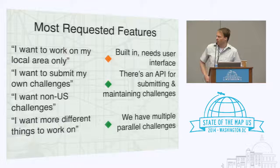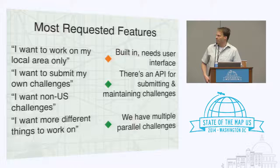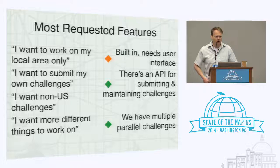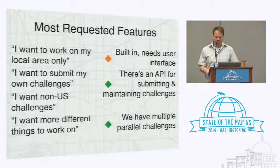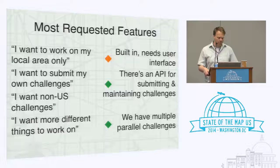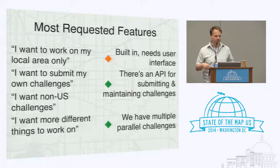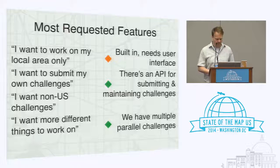We have green lights on some of those features, but also an orange light. The most requested feature — location filtering — is almost ready. Real soon now, as they say. We're still building a good user interface for it. We do support location in MapRoulette and you can have local challenges, but there's still no way for you to select it right now, so it basically doesn't work yet. It almost works though — I was actually working on it last night, working hard for you all.